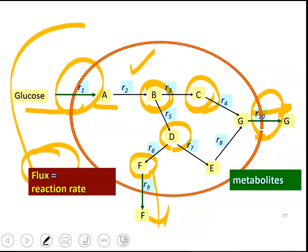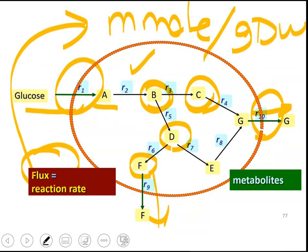And usually the flux unit is millimole or micromole per gram dry weight, so it is normalized based on the mass of the cell per hour or minute. So this is the generic form of the rates we are dealing with within this course.